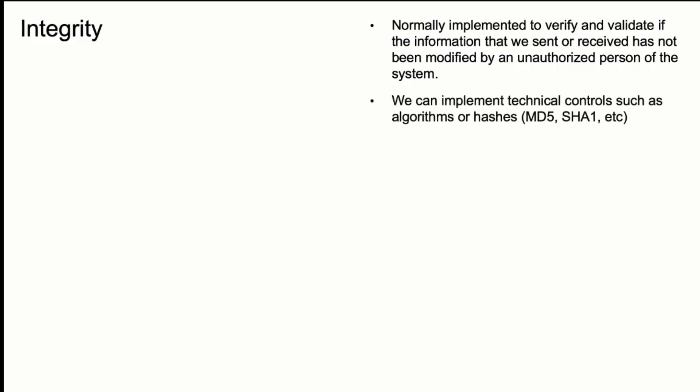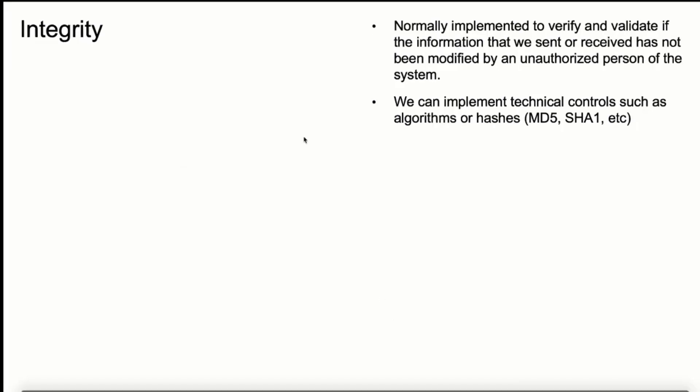How can we implement integrity in our company? We normally use hashes. The hash concept is something important that we are going to explore in future videos. The important part is that a hash is a mathematical algorithm that creates a signature of the file, email, or data that we are going to use. Let me demonstrate this using a hash generator online — let's go to Google and search for a hash generator.